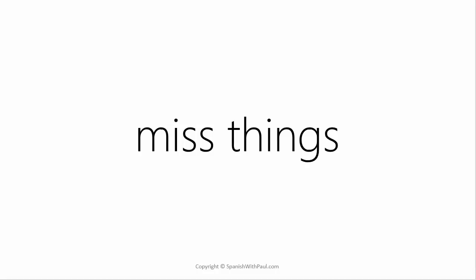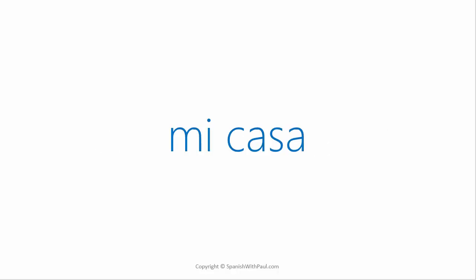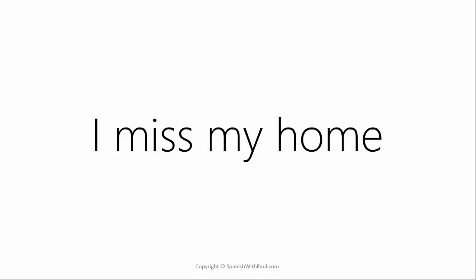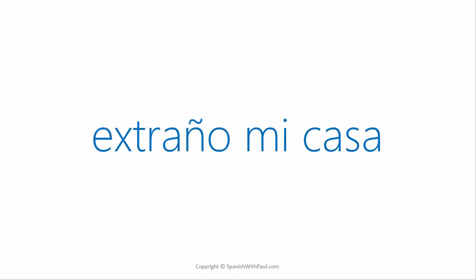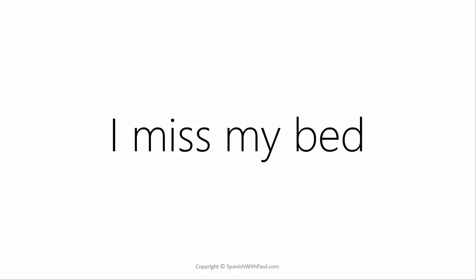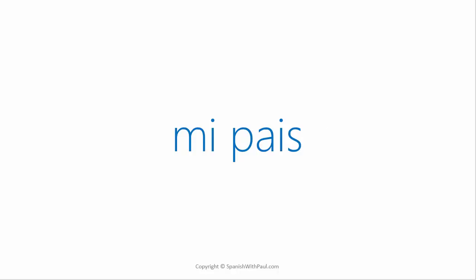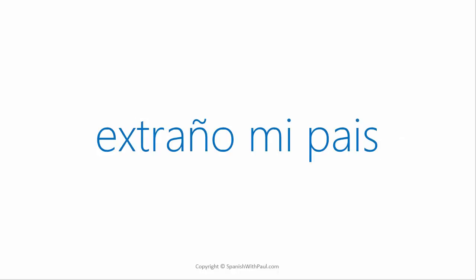We can miss people but we can also miss things. For example, let's say we're out of the country and feeling nostalgic for home. 'My house' or 'my home' would be mi casa — you'll also hear this pronounced with more of an S sound depending on which country you're in, but either way you'll be understood. 'I miss my home' is extraño mi casa. Something else you might miss is your bed — mi cama. 'I miss my bed' is extraño mi cama. 'My country' in Spanish is mi país. 'I miss my country' is extraño mi país.